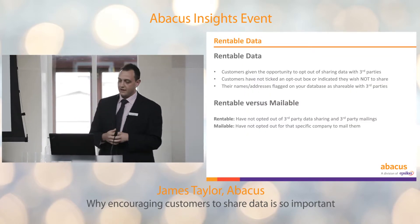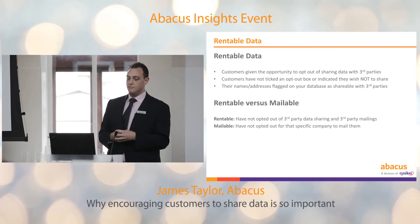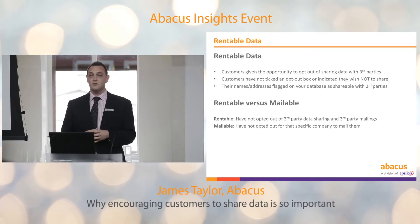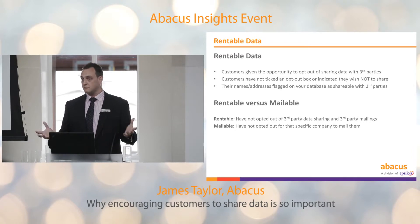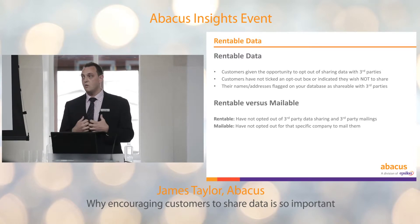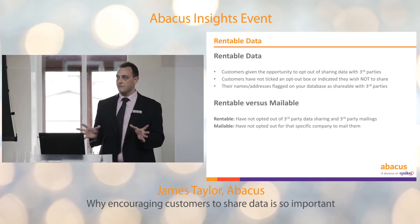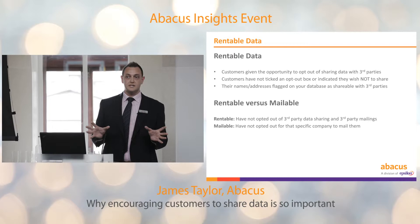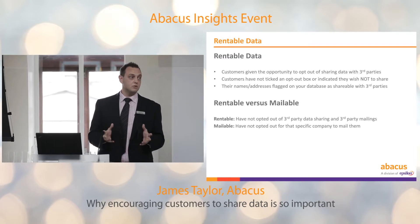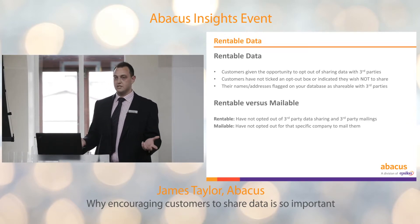For rentable data, it's all about giving customers the opportunity to opt out of sharing data. If a customer hasn't ticked an opt-out box or got in contact to say they don't want their data shared, by all means you can share it. If their names are flagged on your database as shareable, when we get it we'll consider them as shareable — so the more information we can get, the more data goes into the Abacus Alliance. There is a big difference between rentable data and mailable data, and although the option is the same — opt out — you need to flag them separately.